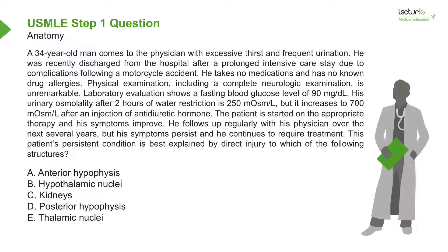Laboratory evaluation shows a fasting blood glucose level of 90 mg per deciliter. His urinary osmolality after 2 hours of water restriction is 250 mOsm per liter, but it increases to 700 mOsm per liter after an injection of antidiuretic hormone. The patient is started on the appropriate therapy, and his symptoms improve.